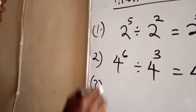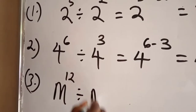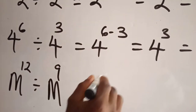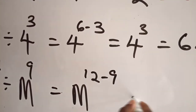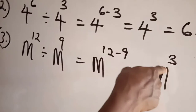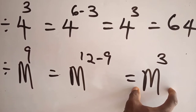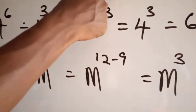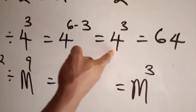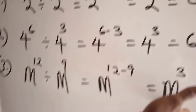Example number 3 on the Second Law: M raised to the power of 12 divided by M raised to the power of 9. Applying the second law, write one M to represent all and subtract the powers: 12 minus 9. That gives you M raised to the power of 3. Like in the First Law, we cannot go beyond this because M is a letter, not a numeral. We stop at M raised to the power of 3. In the first and second examples, 4 raised to the power of 3 simplifies to 64, and 2 raised to the power of 3 simplifies to 8, but here we can't go beyond M cubed.